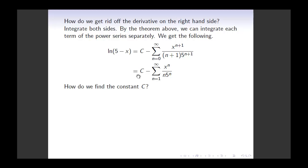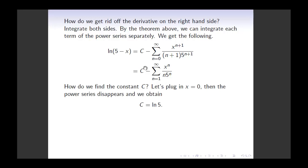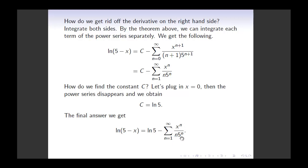To find the arbitrary constant c, I plug in x equals 0 to both sides. The power series disappears, and on the left-hand side I get ln of 5, so c equals ln of 5. Now I can write down the answer: the power series representation of ln of 5 minus x is ln of 5 minus summation from 1 to infinity, x to the power n divided by n times 5 to the power n. I found this by using the geometric series for 1 over 5 minus x and applying the integration theorem.